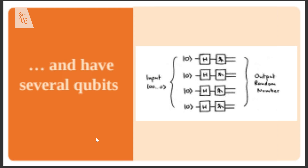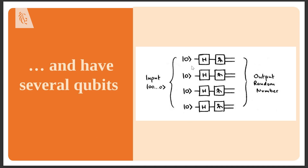We can have several qubits in a system. Here I'm showing a simple circuit with four qubits, each represented by a wire. Applying a Hadamard gate to each qubit creates an equal superposition, so each qubit has equal probability of being measured as zero or one. This means any combination of outputs has equal probability — making this simple circuit a random number generator.